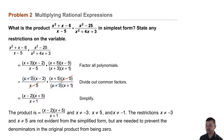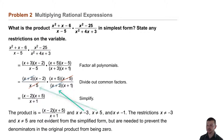So we state the product is x minus 2 times x plus 5 over x plus 1, and x does not equal negative 3, x does not equal 5, and x does not equal negative 1.